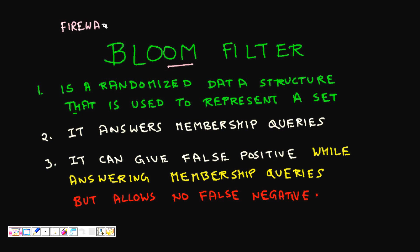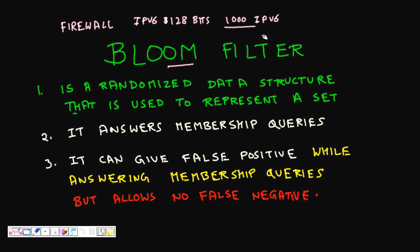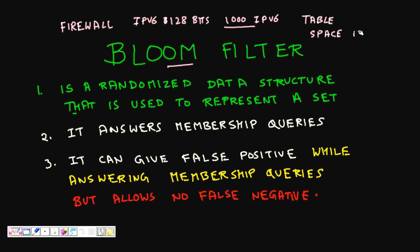We have a firewall and what we want to do is block certain IP addresses. Let's say we have IPv6, that is 128-bit addresses, and there are 1000 IPv6 addresses that we need to block. If you want to represent this using a simple table — element present or not — then you need 1000 × 128 bits of storage.